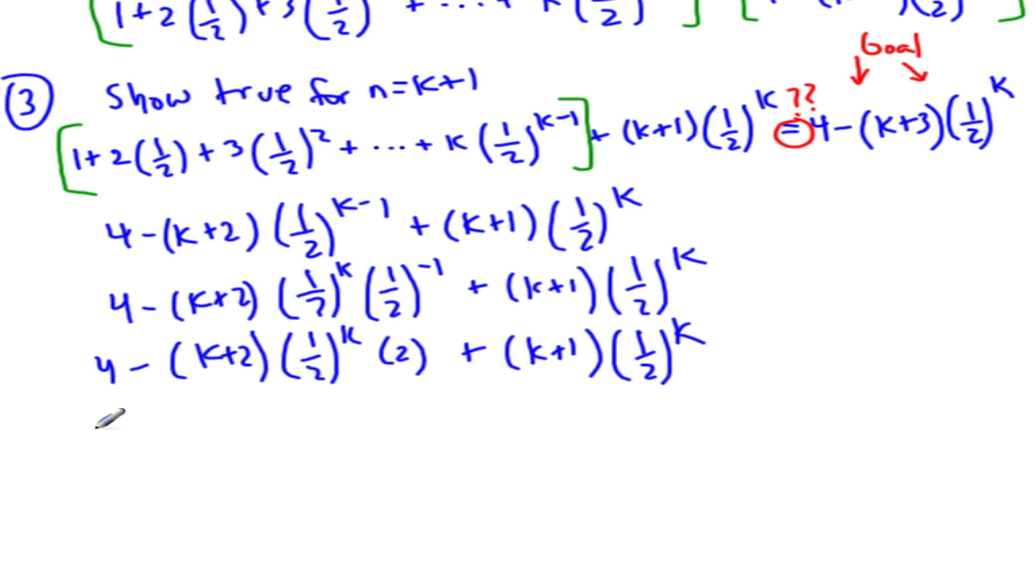All right, so then what I did is I distribute this 2, this 2 right here. I'm going to throw it in to this 2, and I'm also going to give it to that k here. So I have k plus 2k plus 4, 1 half k, plus k plus 1, 1 half k.